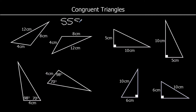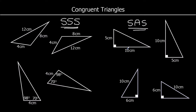If we know two sides and the angle in between them, the triangles must again be congruent. We call that Side Angle Side, or SAS — two lengths and the angle in between them.